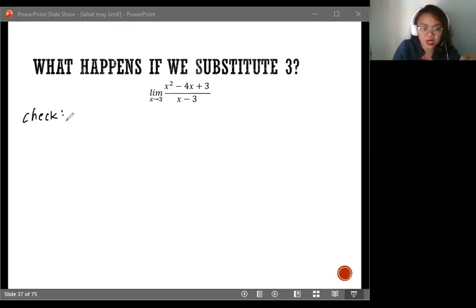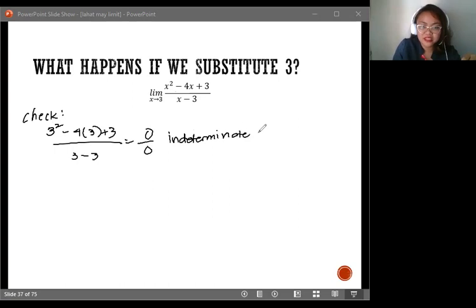Check if it's indeterminate. So, substitute the value of 3 here. We'll get 3 squared minus 4 times 3 plus 3 all over 3 minus 3, which is 0 over 0, which is an indeterminate limit. So, this is an indeterminate limit.